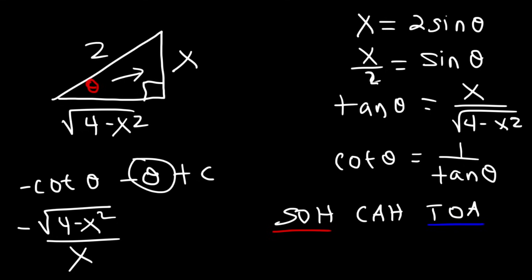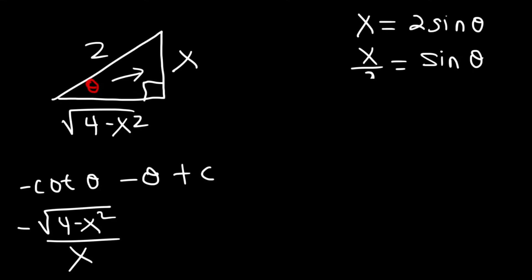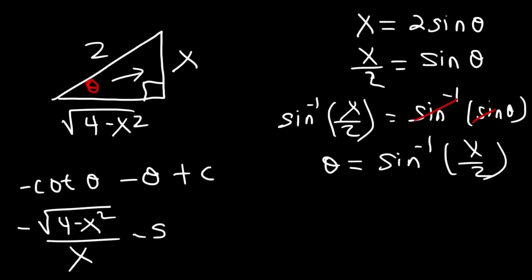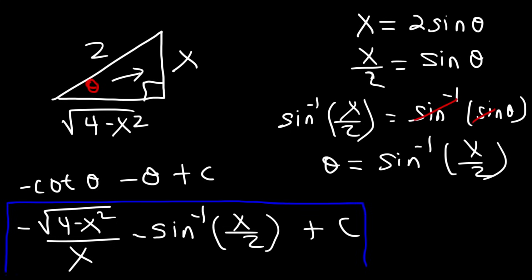Now, what can we replace theta with? Recall that sine theta equals x over 2. If we take the arcsine of both sides, these two expressions cancel, so theta equals arcsine of x over 2. Therefore, the final answer is negative cotangent becomes negative the square root of 4 minus x squared over x, and negative theta becomes negative arcsine of x over 2, plus C. That's how you find the indefinite integral using trig substitution.